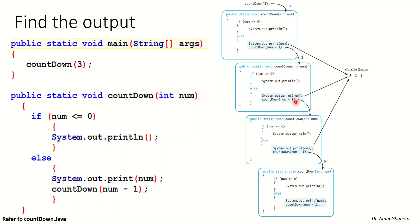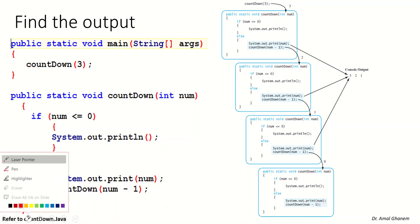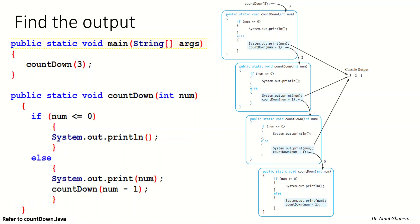We call the method again with num minus one, which is one. We check the base case — it's not zero, so we go to the else part and output one. Then we call the method sending num minus one, which is zero. When we reach zero, this is the base case — we print a new line and stop. Going back, we have no more steps to execute in any of the previous calls.